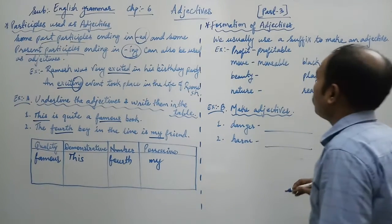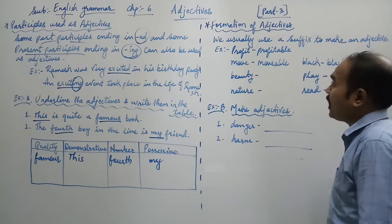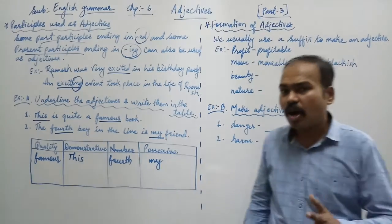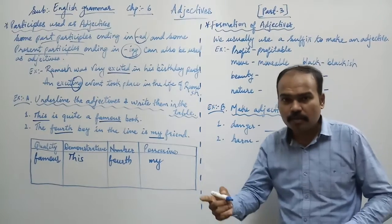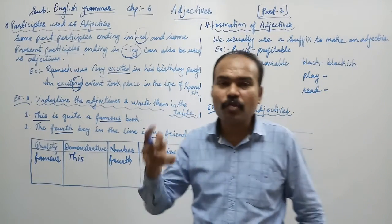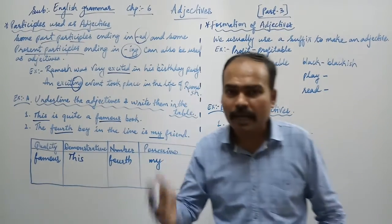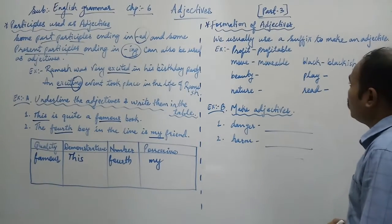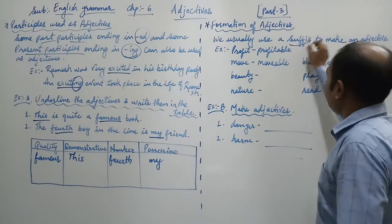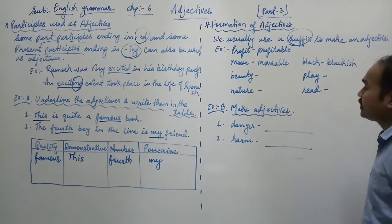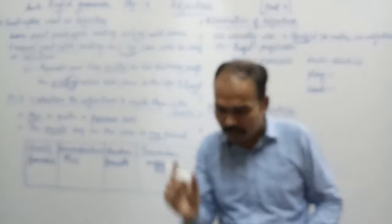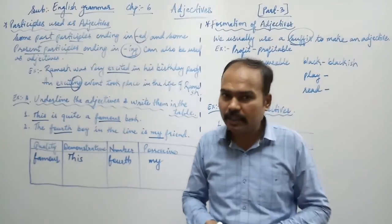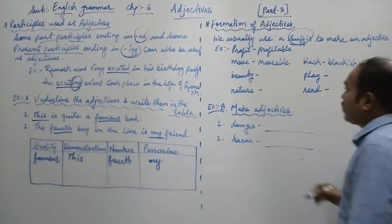Let us move forward. Next, that is formation of adjectives. Now, how are adjectives formed? We form an adjective from a noun, we form an adjective from a verb, as well as from adjectives also. How do we do it? We have to add a suffix. That means noun, verb or adjective, we have to add some word after it. We call them suffix. Then it becomes an adjective.